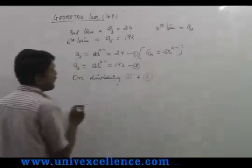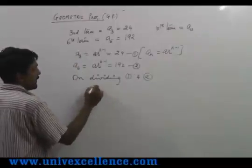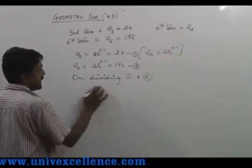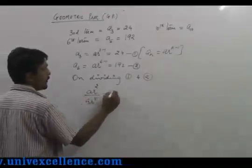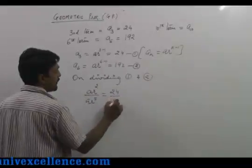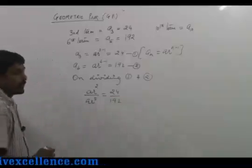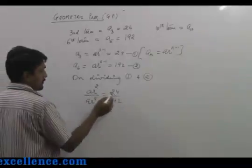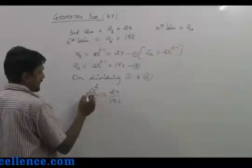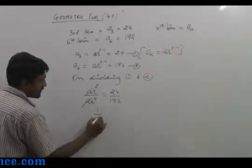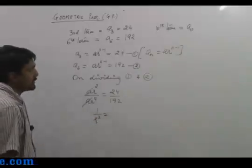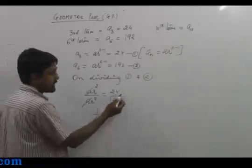We get a times r squared over a times r to the fifth equals 24 over 192. We can cancel the a's, so 1 over r cubed equals... we can cancel these terms.